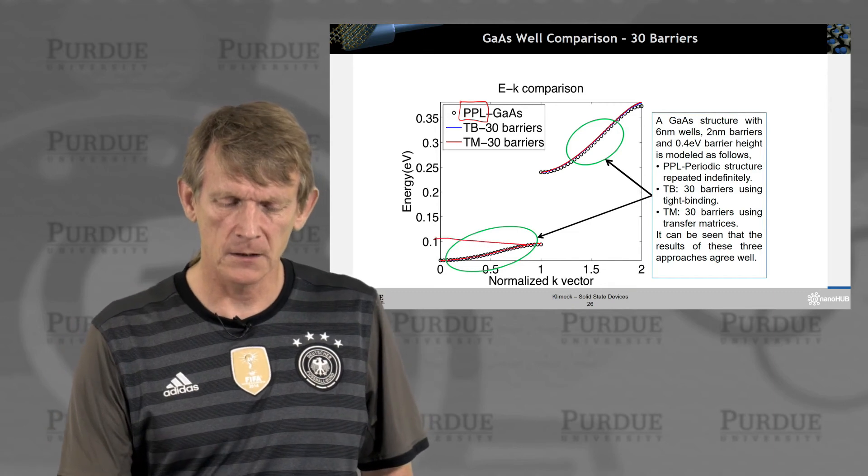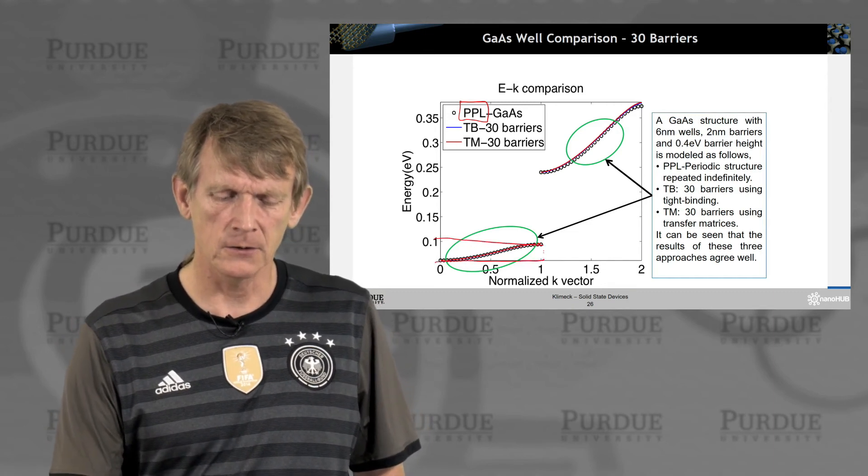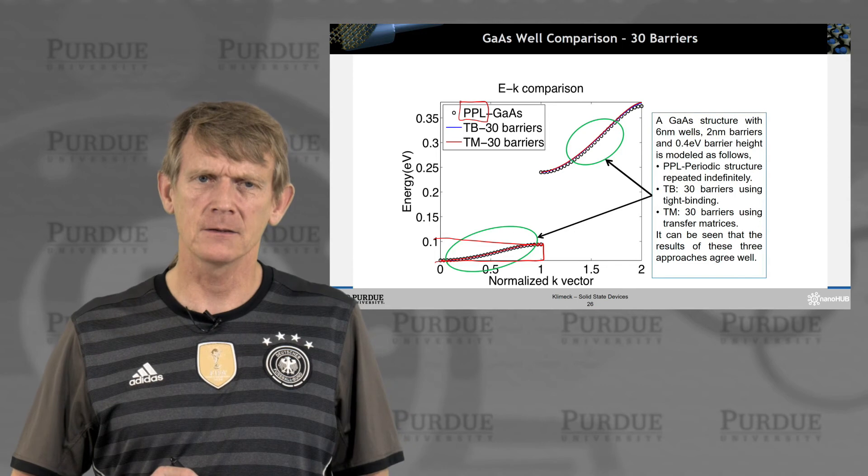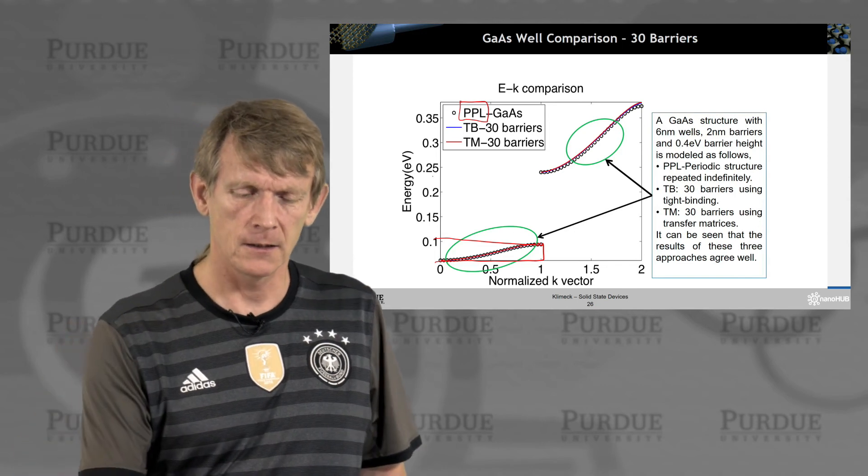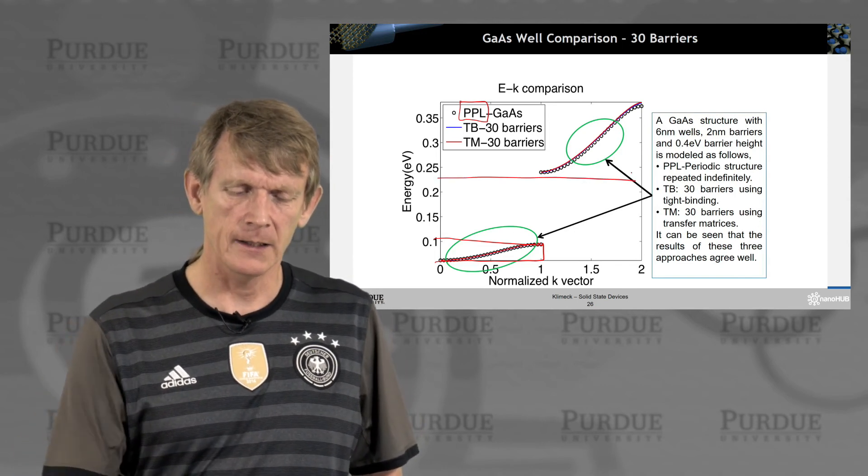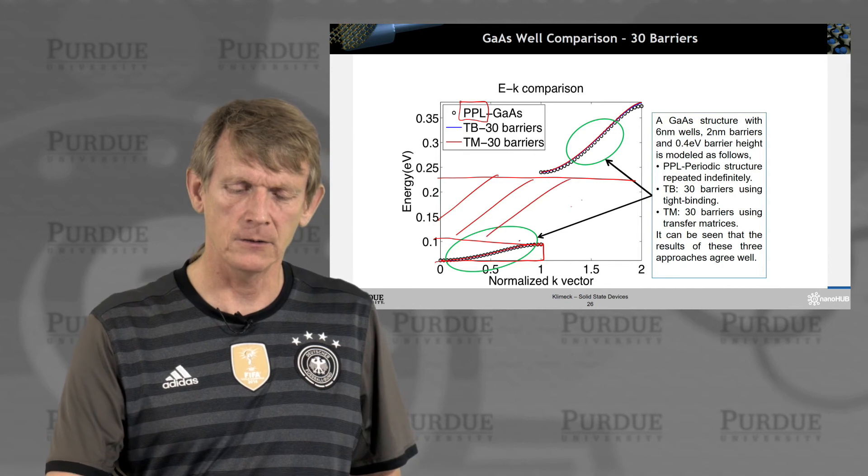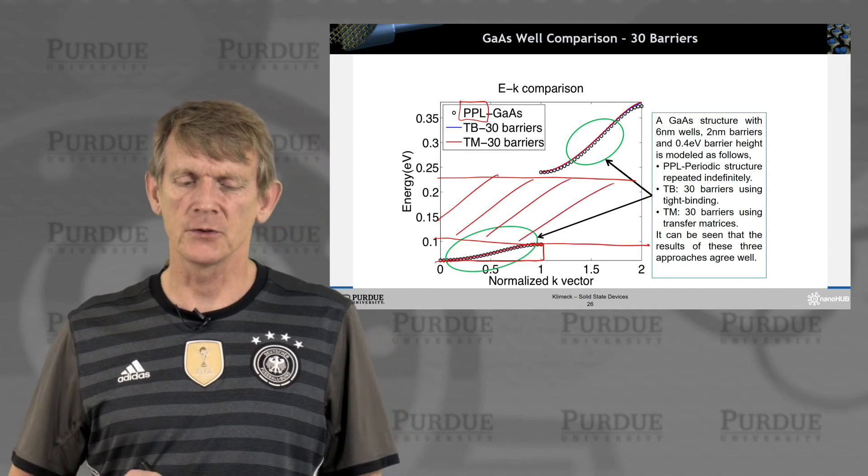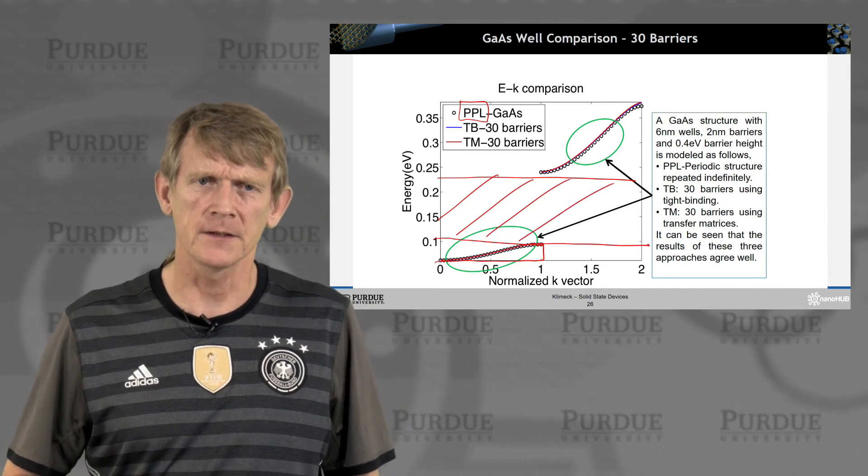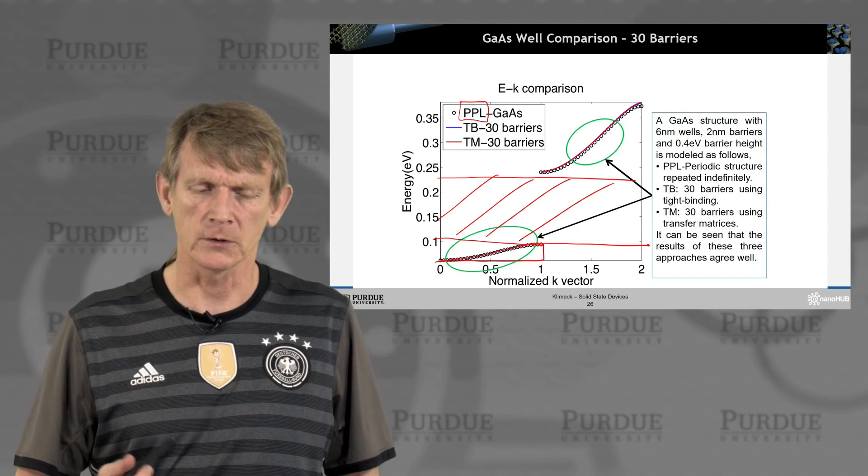Inside of the bands, here, electrons are allowed, and they can propagate throughout the crystal, and across these bands, electrons are not allowed, and there's no transmission, or there's no presence of electrons. And this is what we would call a gap.